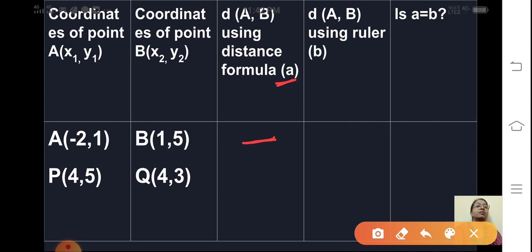Then next column distance AB using ruler. You have to plot these two points A and B on the graph paper or on cartesian plane.